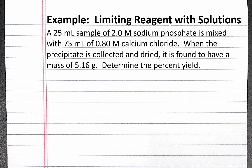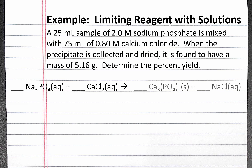The first thing we need to do for this problem is to write out our balanced chemical equation. We're adding together sodium phosphate and calcium chloride. Our products will be calcium phosphate and sodium chloride. Calcium phosphate is insoluble, so that will be our precipitate.